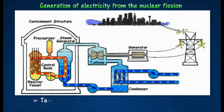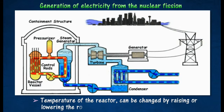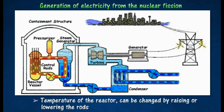The temperature of the reactor can be changed by raising or lowering the rods. In an emergency, all the rods are lowered to shut down the reactor.